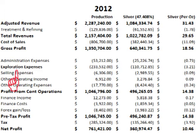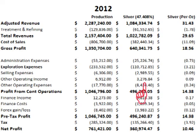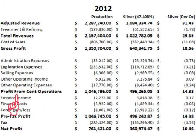The annual report also has a breakdown of exploration costs in a separate table, which we will break down item by item in a moment. There were selling expenses of about 6.3 million with about 3 million coming from silver or 9 cents per ounce. There was other operating income of about 6.9 million with about 3.3 million coming from silver or 9 cents per ounce. There were other operating expenses of a little less than 18 million with about 8.4 million coming from silver or 24 cents per ounce. Subtracting administration, exploration, and other costs from the gross profit gives a profit from continuing operations of about 1.047 billion, with about 500 million coming from silver or $14.38 per ounce.